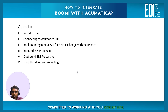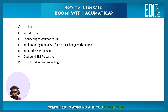I am going to detail this presentation in five sections. First one is on connecting to Acumatica ERP. The next one is implementing a REST API for data exchange with Acumatica. Third, inbound media processing. And fourth, outbound media processing section along with error handling. So let me start with the first section, connecting BOOMI to Acumatica ERP.